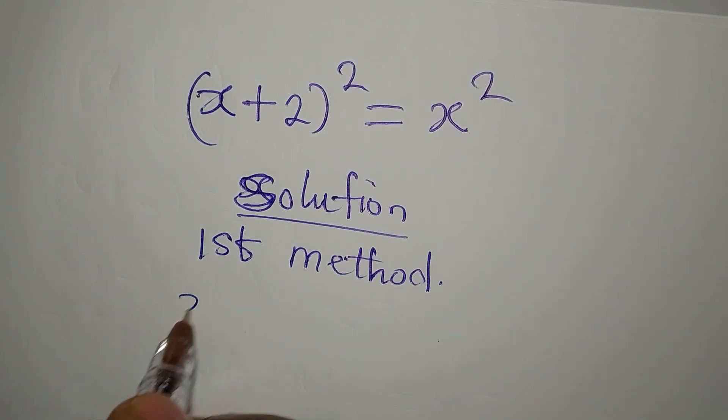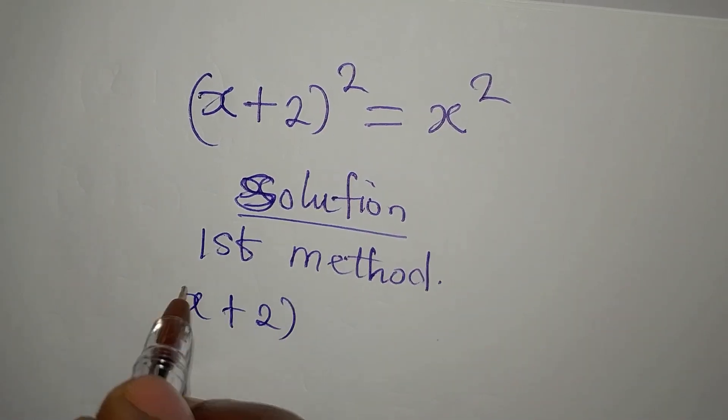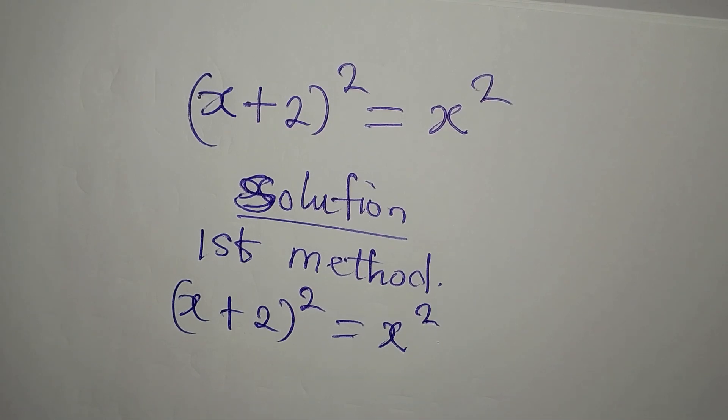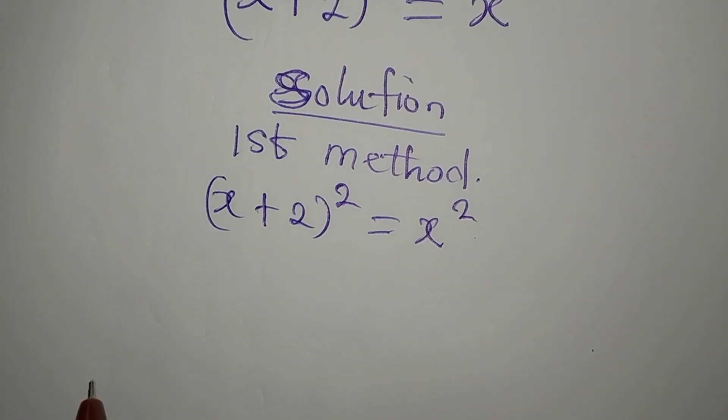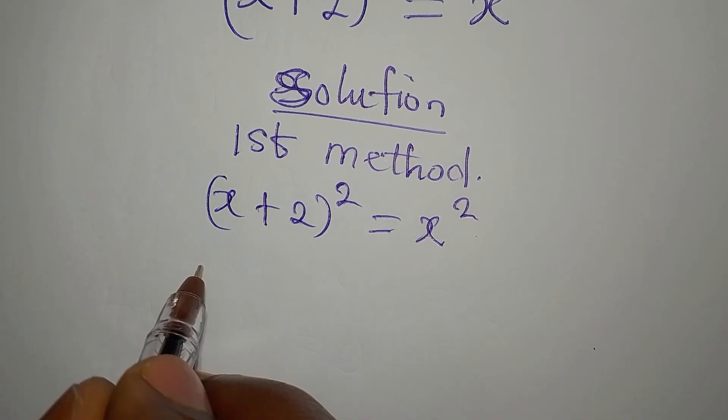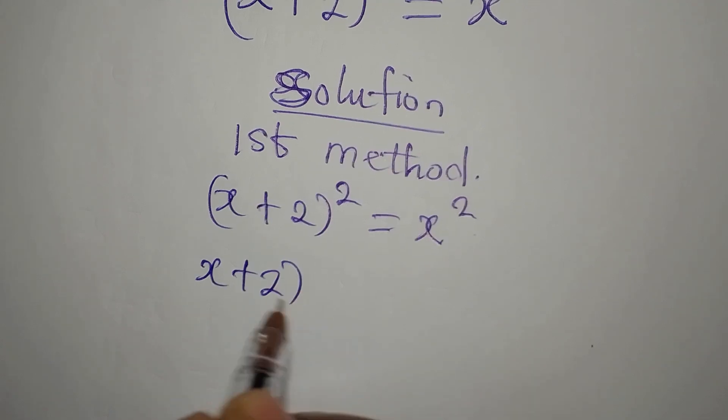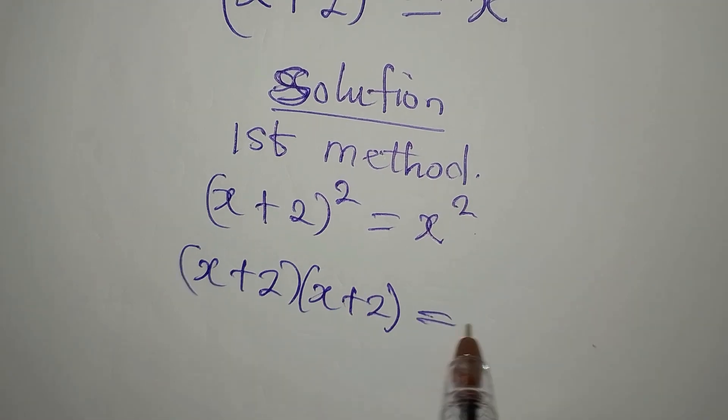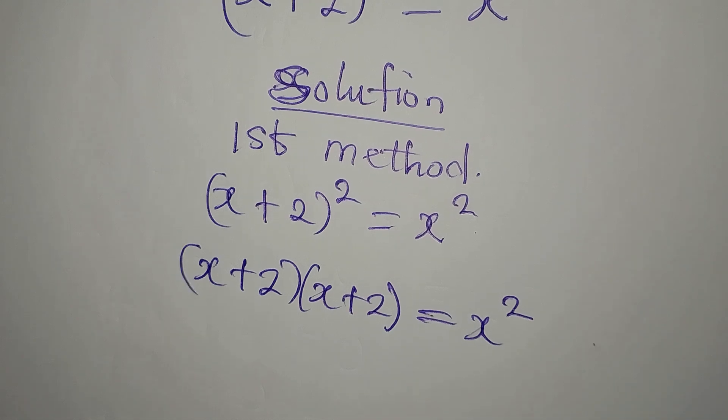The first method: x plus 2 to the power of 2 equal to x to the power of 2. Here is what we're going to do. Expand this for the first method: x plus 2 into bracket x plus 2, and this is equal to x to the power of 2.